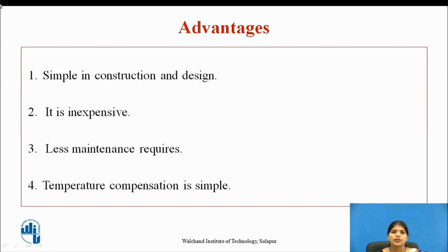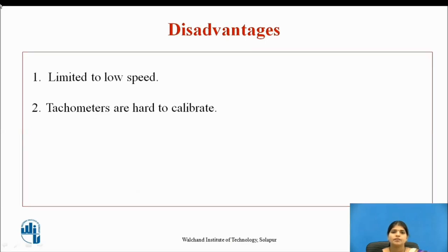The advantages of tachogenerator are: it is simple in construction and design, it is not expensive, it has a linear relationship between output and rotational speed, it requires less maintenance, and temperature compensation is also simple. The disadvantages are: it is limited to low speed and tachometers are hard to calibrate.